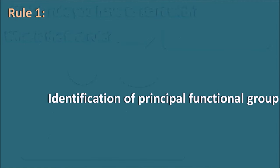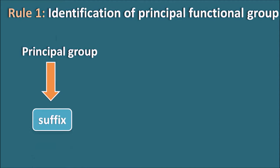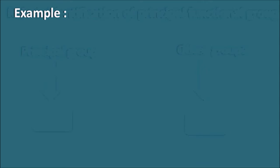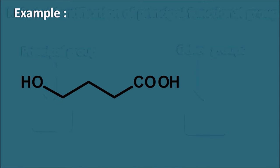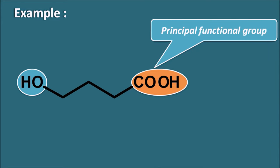Rule 1 indicates the identification of the principal functional group. The principal functional group is represented in the name as a suffix, and any other functional groups are represented as a prefix. Let us consider a simple structure with two functional groups: carboxylic acid and hydroxyl group. Which should be selected as the principal functional group?